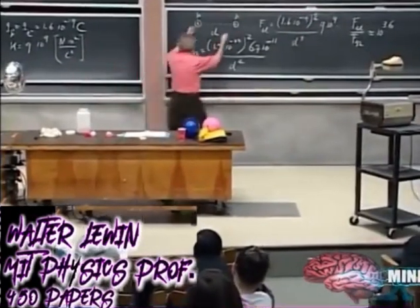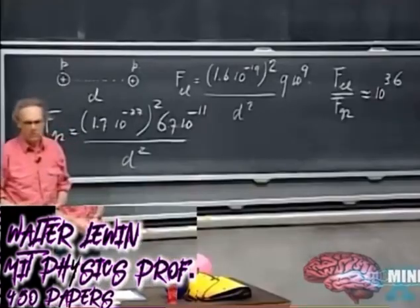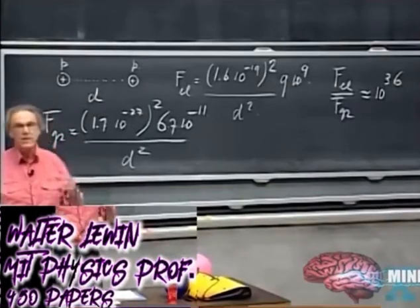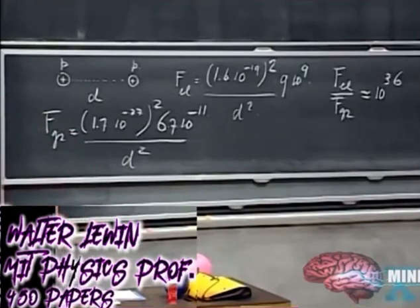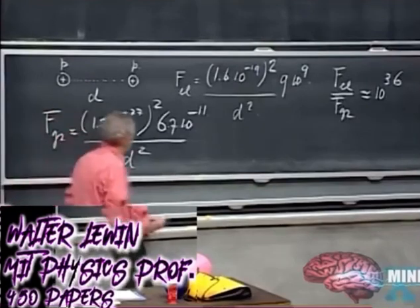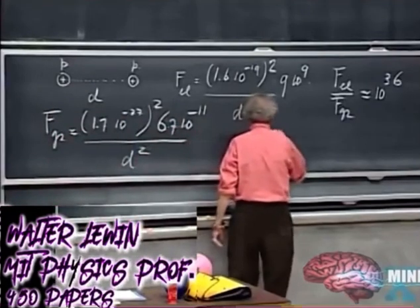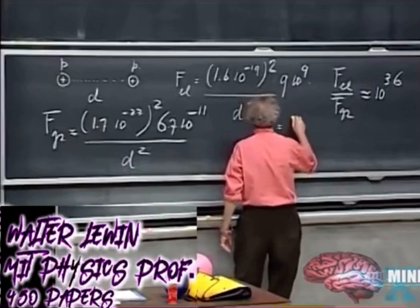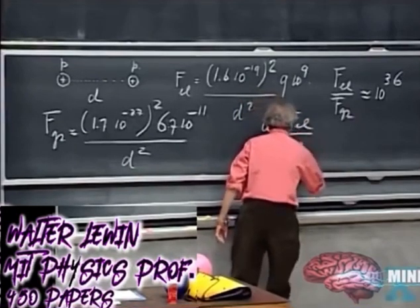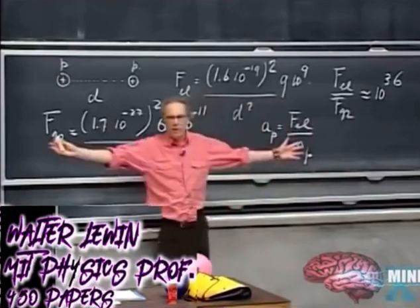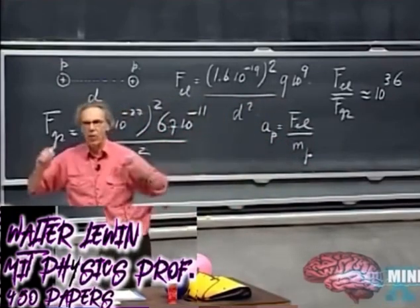If these were the only forces that acted on the protons, and you bring them in the nucleus, which has a size of only ten to the minus twelve centimeters, then the acceleration that the proton will experience is the electric force divided by the mass of the proton, F equals ma, basis of eight-oh-one.